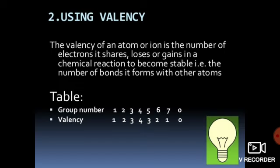To recap: the first rule is to write the symbol of each element. For magnesium chloride, we write Mg for magnesium and Cl for chloride. The second rule is to write the valency. Magnesium has atomic number 12 and electronic configuration 2, 8, 2 — so it loses 2 electrons, giving it a valency of +2.